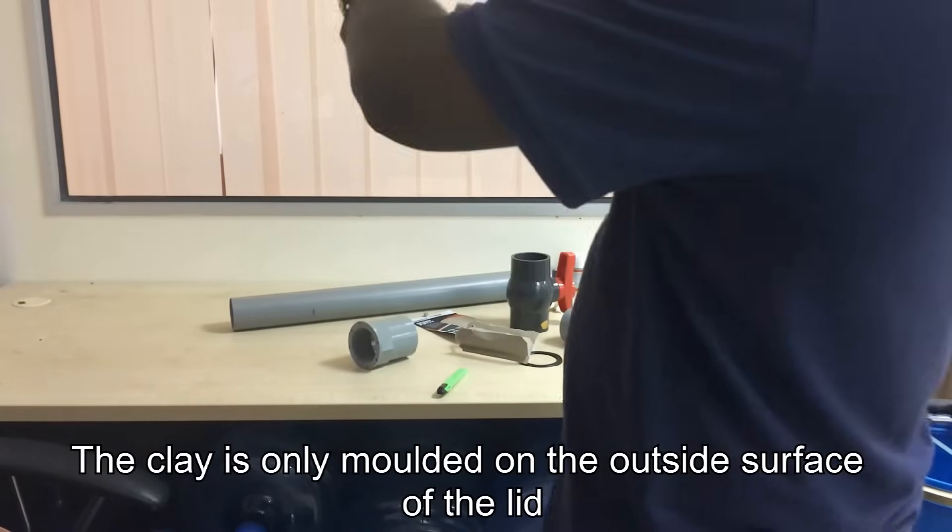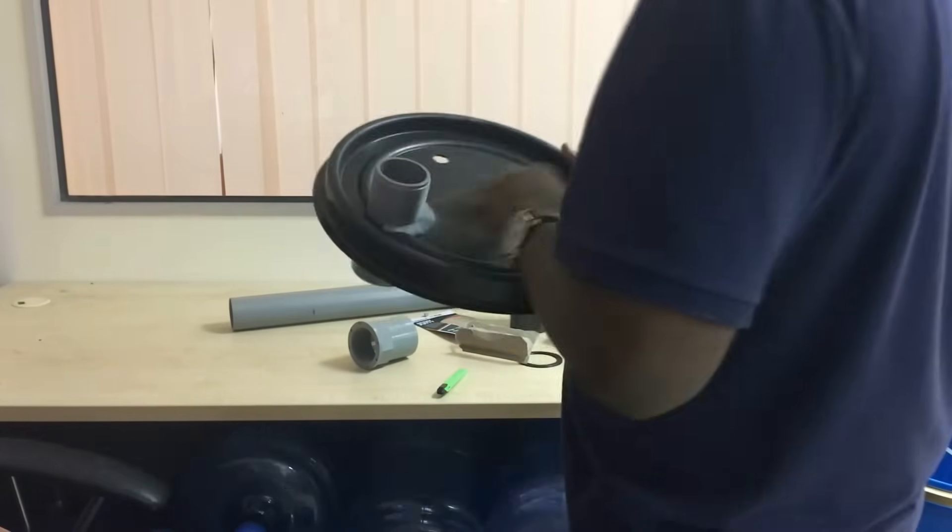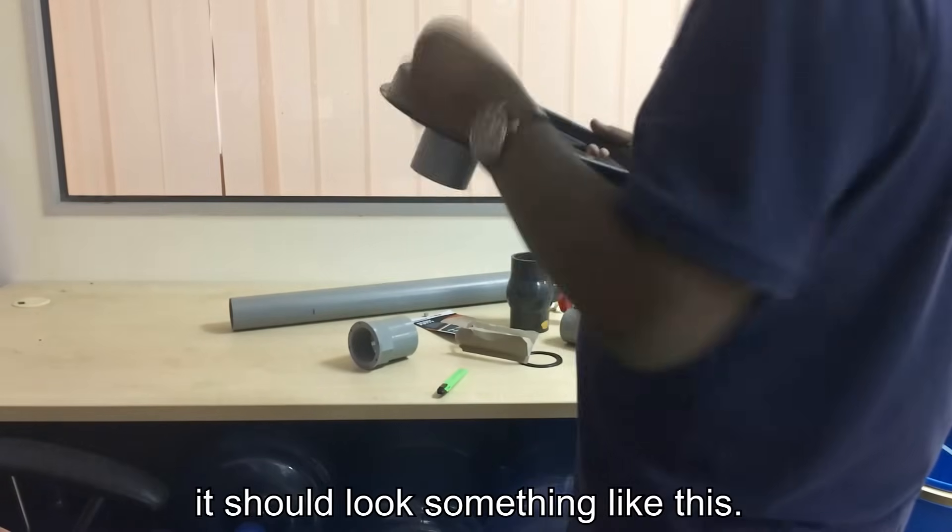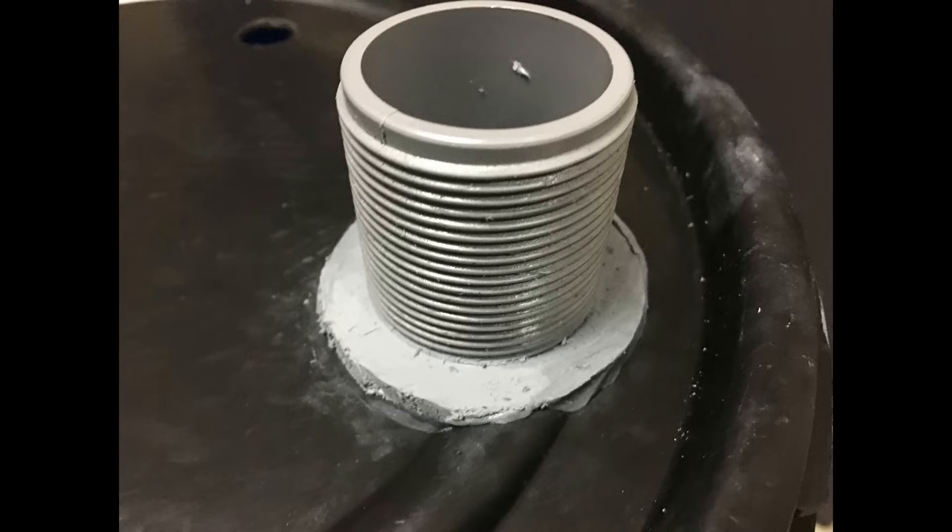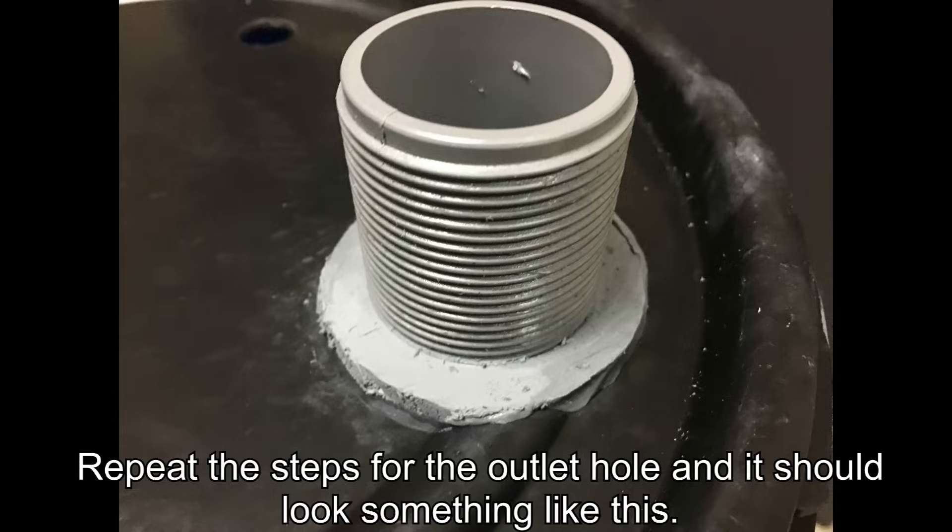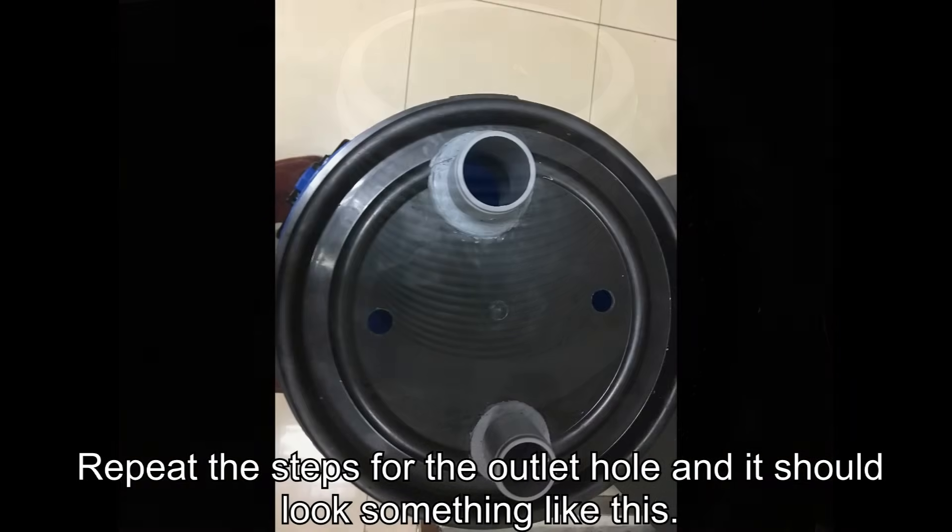The clay is only molded to the outside surface of the lid. Once the clay hardens, it should look something like this. Repeat the steps for the outlet hole and it should look something like this.